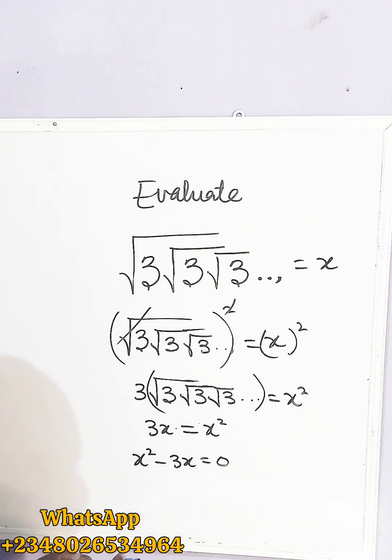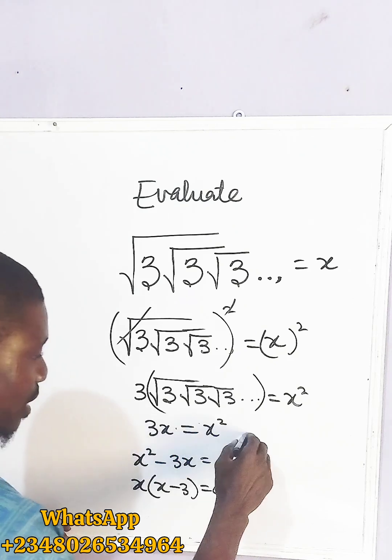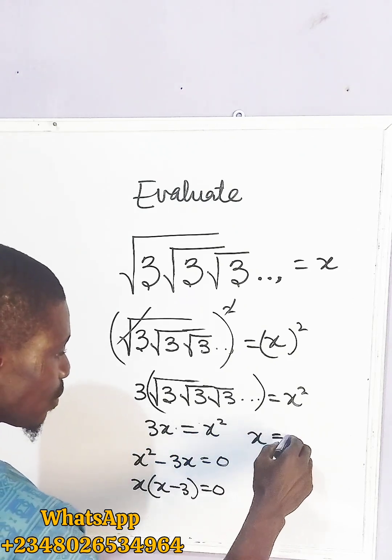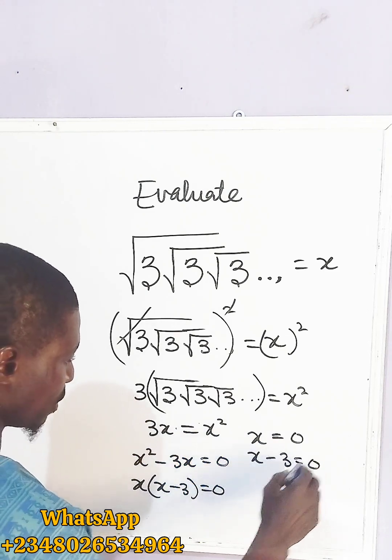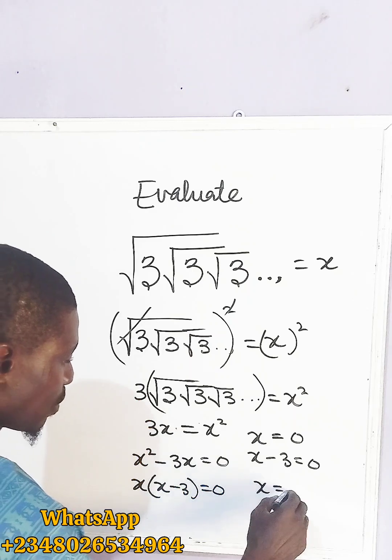So let us factor out x. So here we have x into what? x minus 3 equals what? Zero. So at this point, x equals zero, or x minus 3 equals zero. So x equals 3.